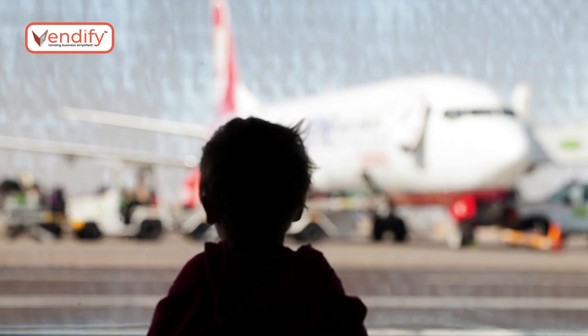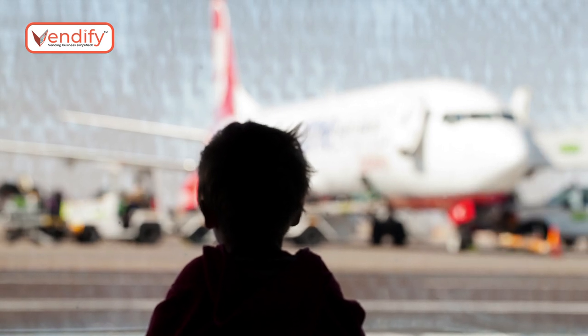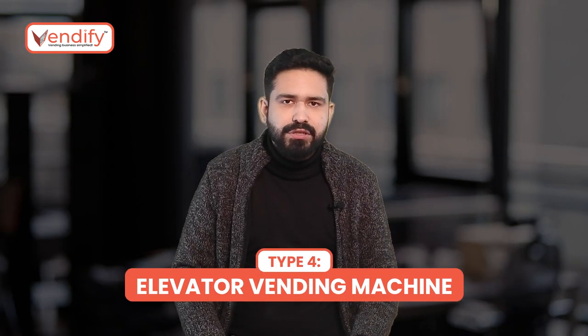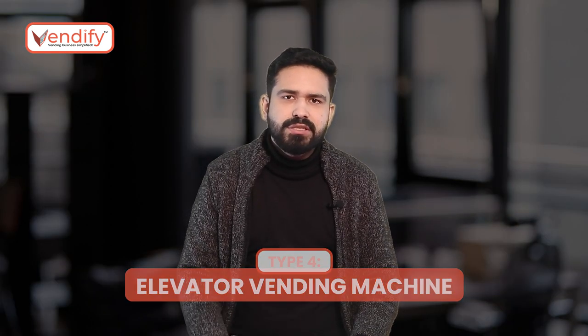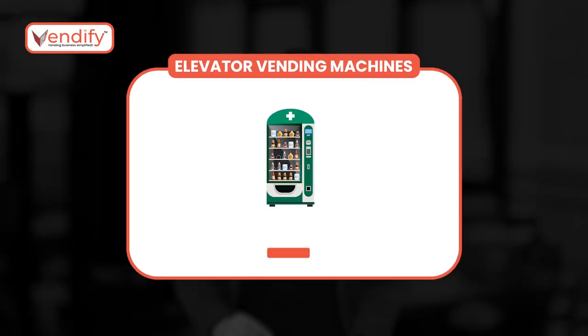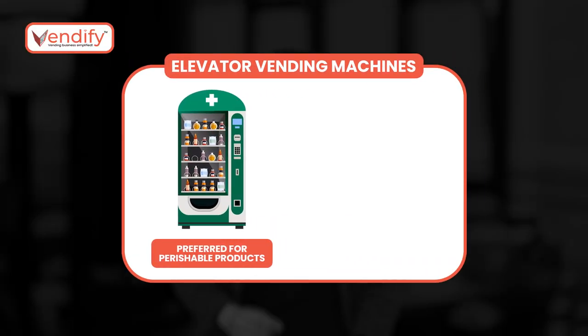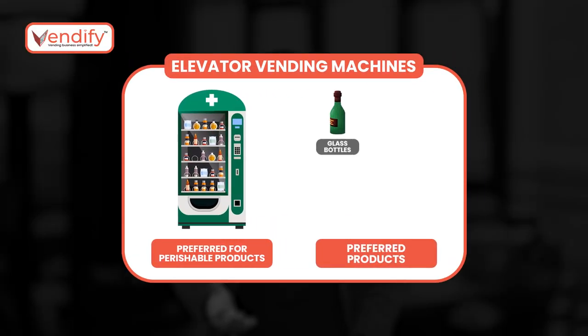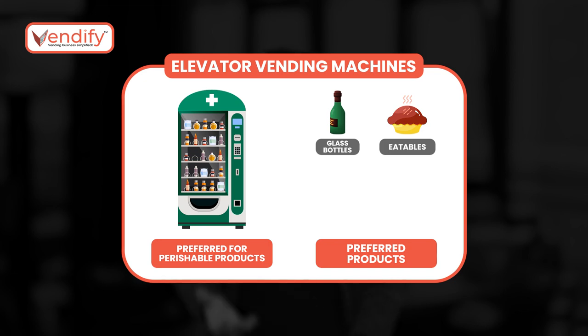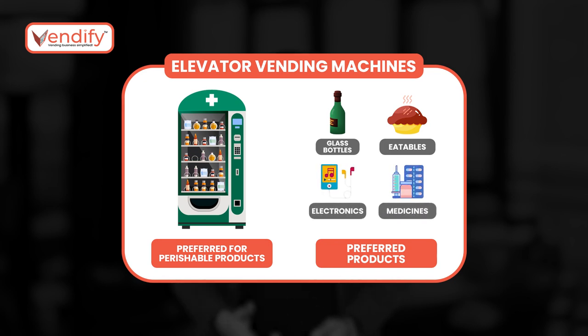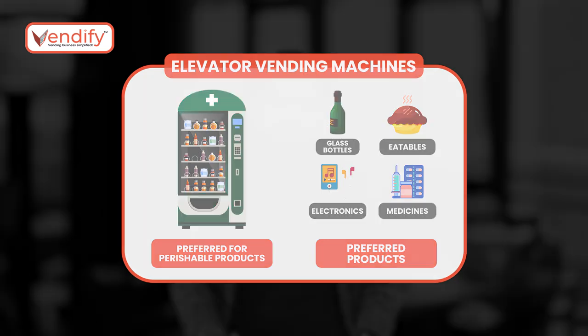Popular brands like Coca-Cola and Pepsi use these machines at prominent locations such as airports to attract customers. Now we have the elevator vending machines. These machines are mostly used for sensitive perishable products such as glass bottle drinks, eatables like pastries and cakes, electronic items, medicines, and other such fragile items.